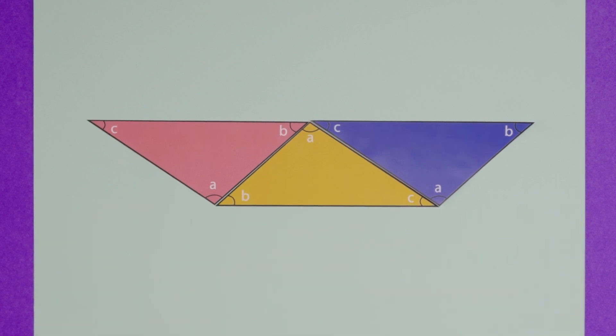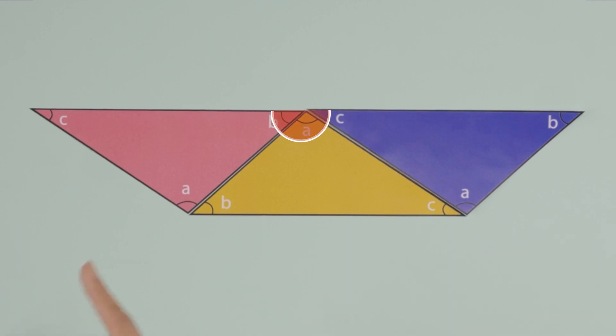Since we rotated both these triangles upside down, these two lines are parallel, so these three angles add up to a straight angle, making 180 degrees. And that's our visual proof: the sum of interior angles of any triangle is 180 degrees.